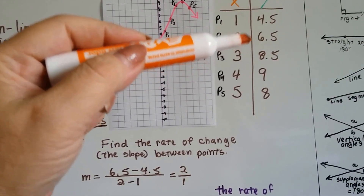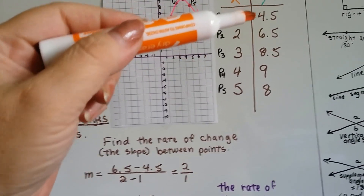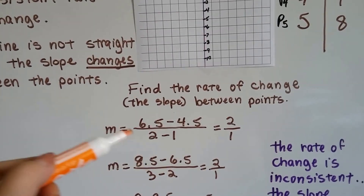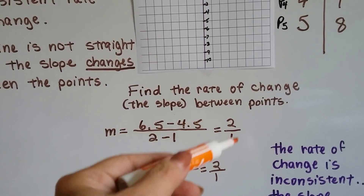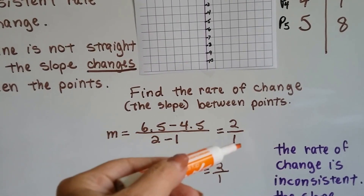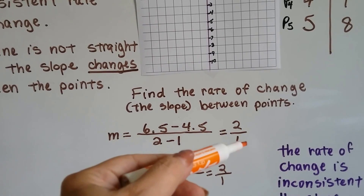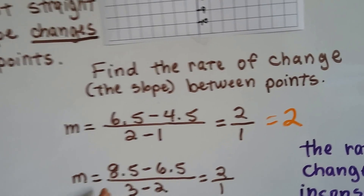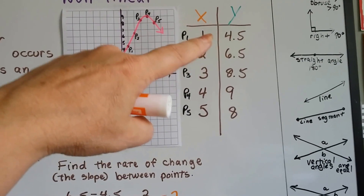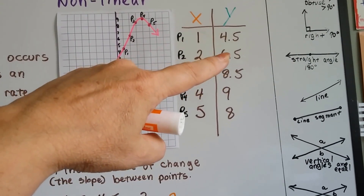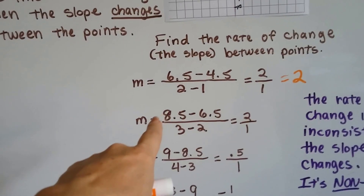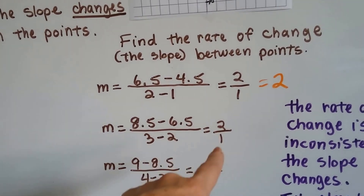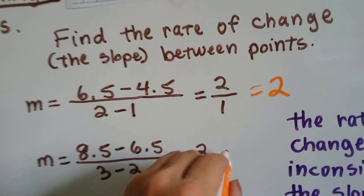So we compare points 2 and 1. We have 6.5 take away 4.5 and 2 take away 1. 6.5 take away 4.5 is 2, and 2 take away 1 is 1. So the slope — rise over run — is 2 over 1, which equals 2. Now we're going to compare points 3 and 2. We have 8.5 take away 6.5 and 3 take away 2. 8.5 take away 6.5 is 2 again, and 3 take away 2 is 1. That's 2 over 1 again — it's the same. So far you'd think that our slope is the same and it would be linear.